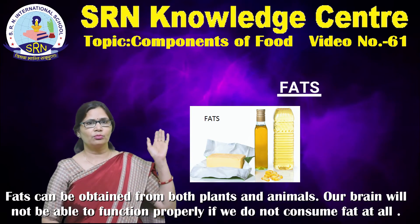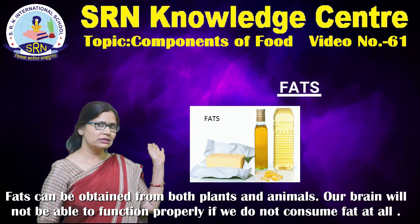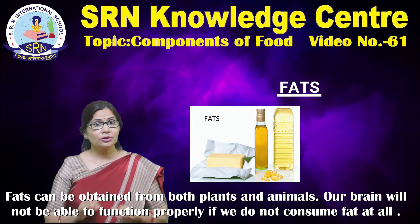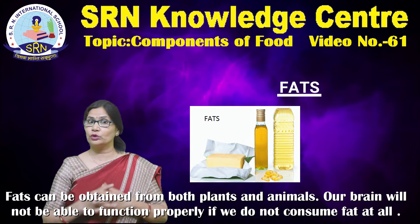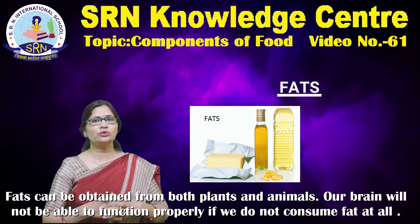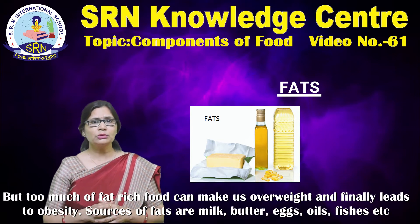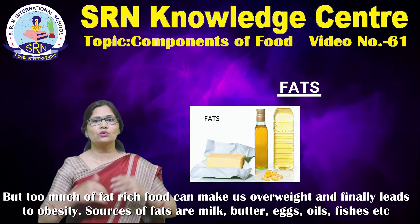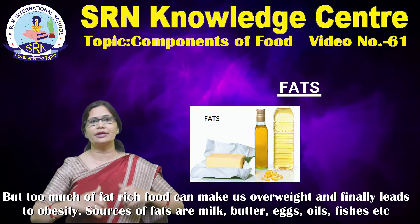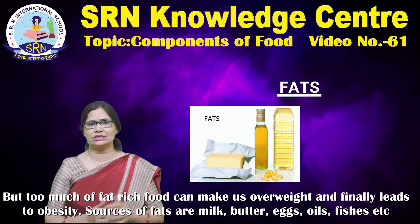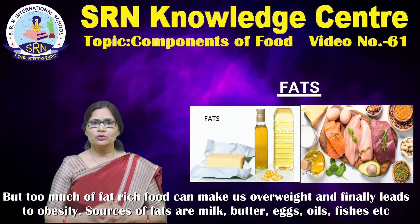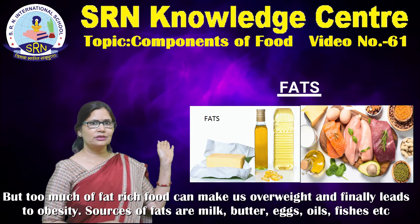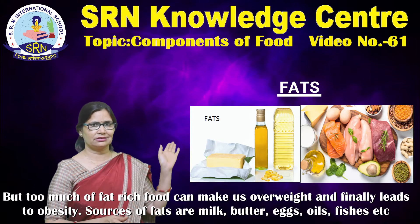Fat can be obtained from both plants and animals. Our brain will not be able to function properly if we do not consume fat at all. But too much fat-rich food can make us overweight and finally leads to obesity. Sources of fats are milk, butter, eggs, oils, fishes, etc.